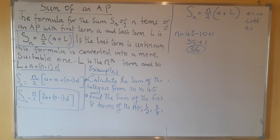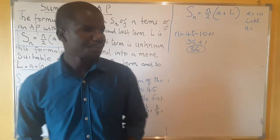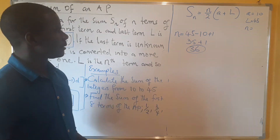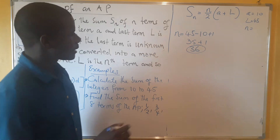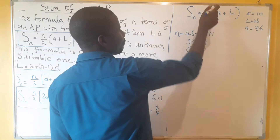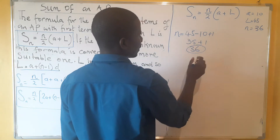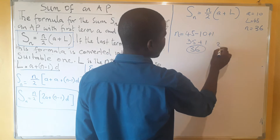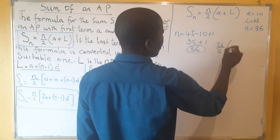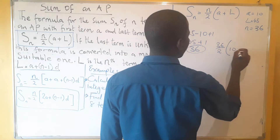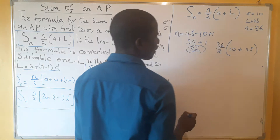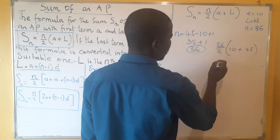It is very important to correctly find 'n' so that we do not make mistakes. Now we fit this into the formula. With n = 36, our first term is 10 and our last term is 45. Dividing 36 by 2 gives us 18, and adding 10 plus 45 gives us 55.